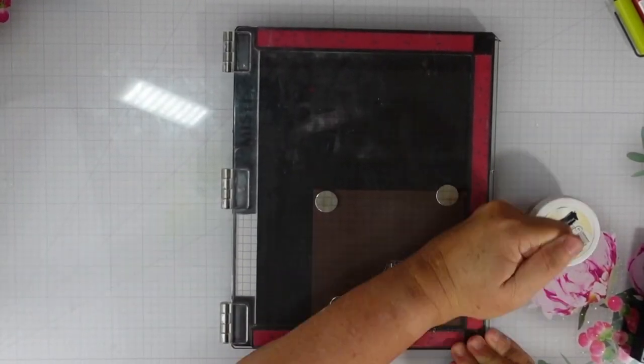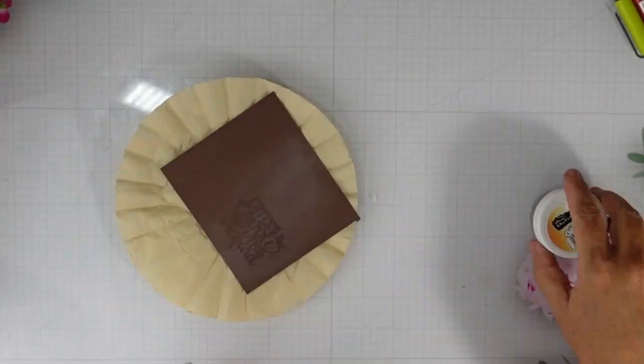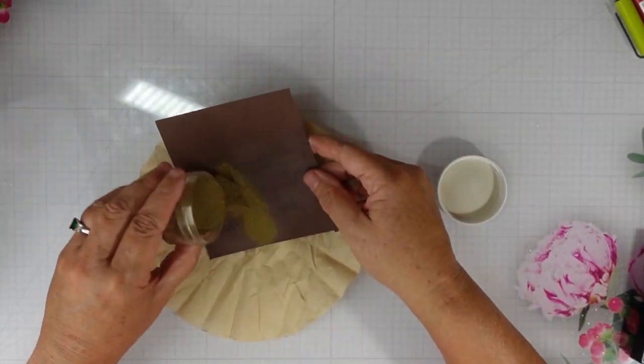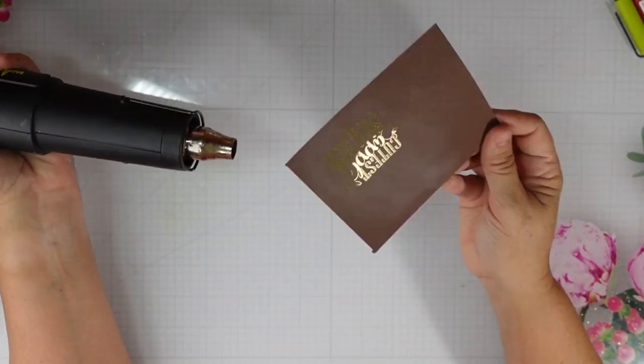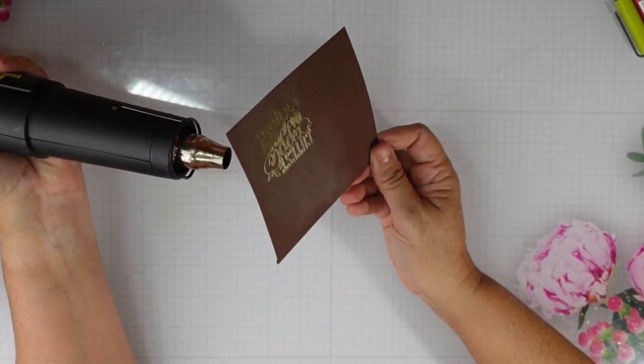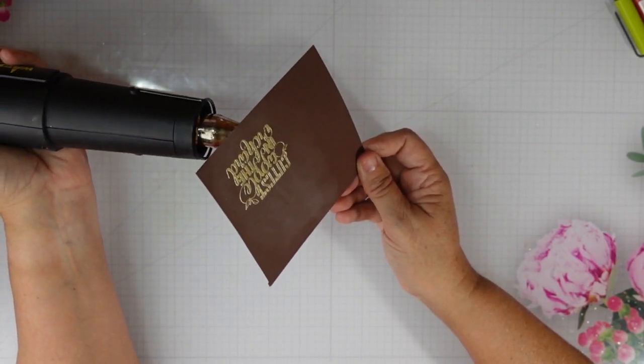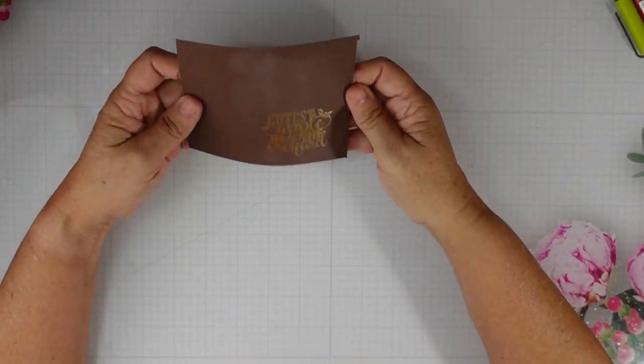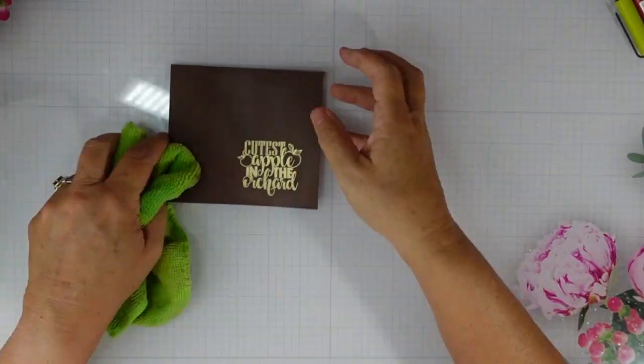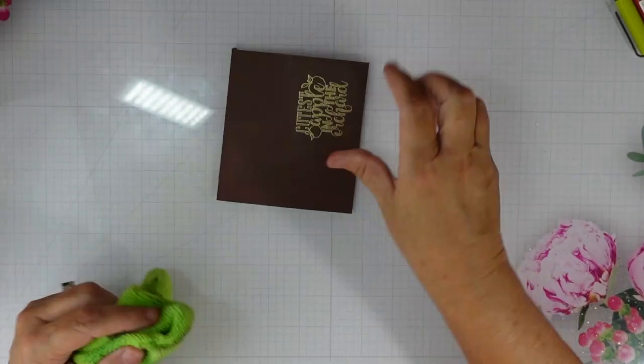Now moving on to my sentiment, I did mention that this came from the fall sentiments stamp set. I have some brown cardstock that I treated with my anti-static powder and I stamped the sentiment that said 'cutest apple in the orchard,' which is why I went with all of the apple products that were available to me in that Full of Thanks stamp set.